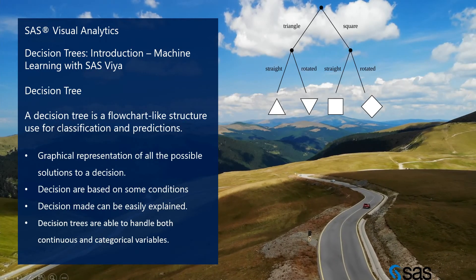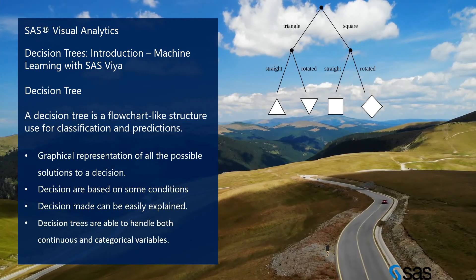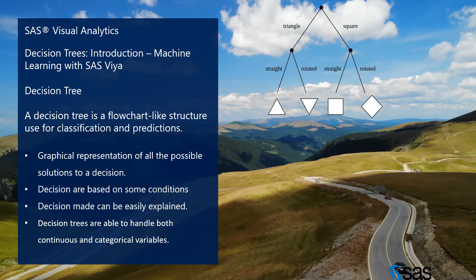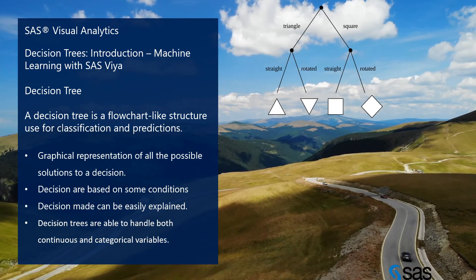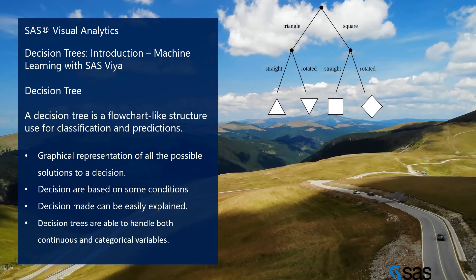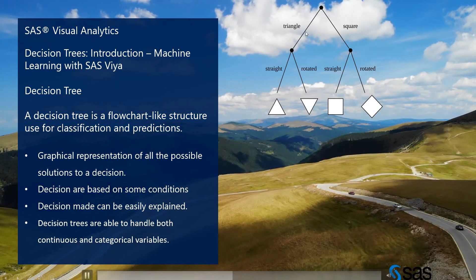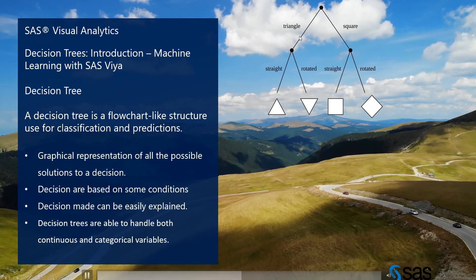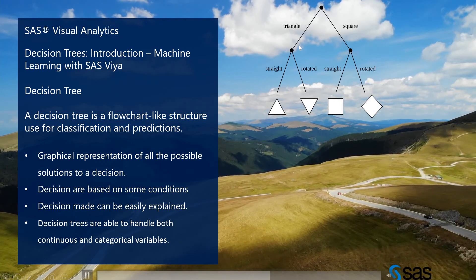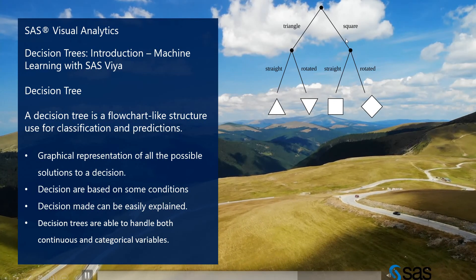A decision tree is a flowchart-like structure used for classification and predictions. I have created one decision tree example here — it is related to data about triangles and squares.